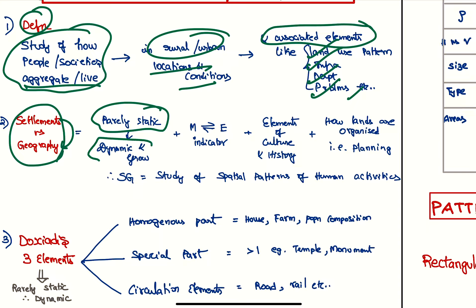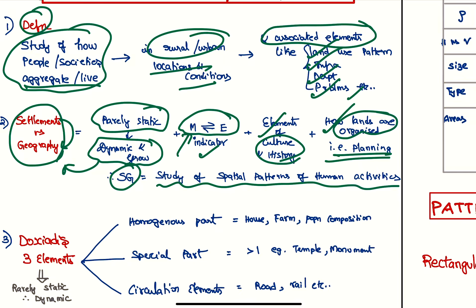Why is settlement geography important and what is the relation between settlements and geography? First, settlements are rarely static—they are dynamic and grow, which is of interest in geographical studies. Man-environment relationship is a very important theme in geography, and settlement is an indicator of that. Elements of culture and history are there in the settlements, and how lands are organized—that is planning—is there in settlement geography.